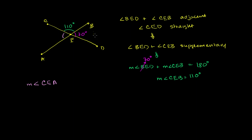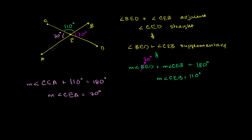We can use the exact same logic. Angle CEA and angle CEB are adjacent — they form a straight angle if you look at their outsides, so they must be supplementary. So the measure of angle CEA plus the measure of angle CEB, which is 110 degrees, must be equal to 180 degrees. Subtract 110 from both sides and you get the measure of angle CEA is equal to 70 degrees.